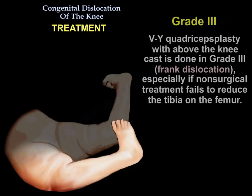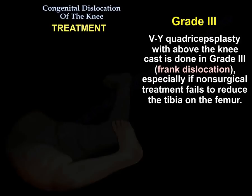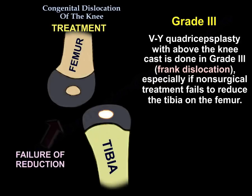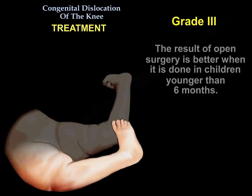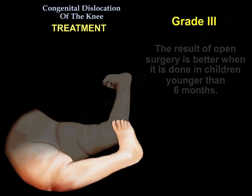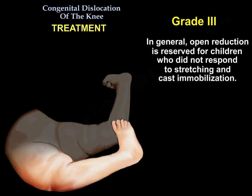The V-Y quadricepsoplasty with an above-the-knee cast is done in grade three or frank dislocation, especially if non-surgical treatment fails to reduce the tibia on the femur. The result of open surgery is better when performed in children younger than six months. In general, open reduction is reserved for children who did not respond to stretching and cast immobilization.